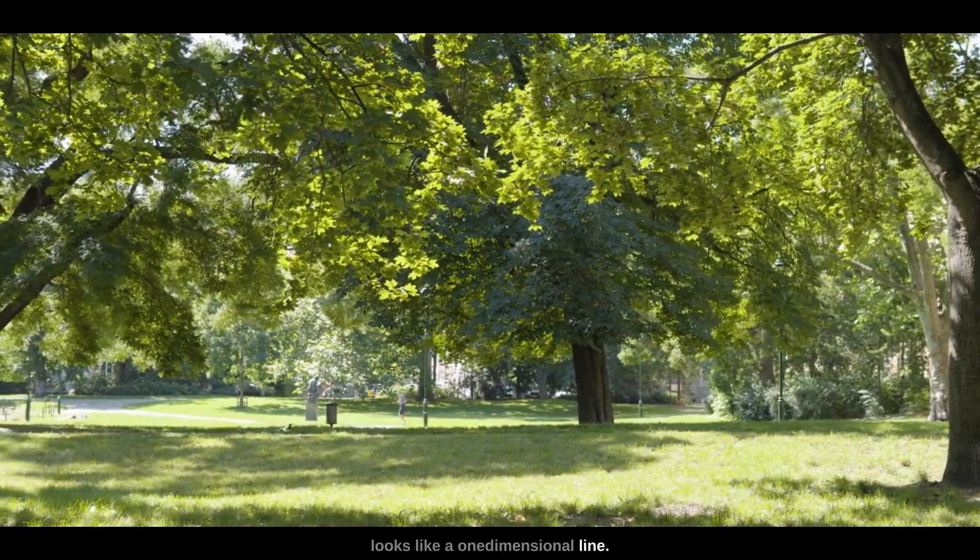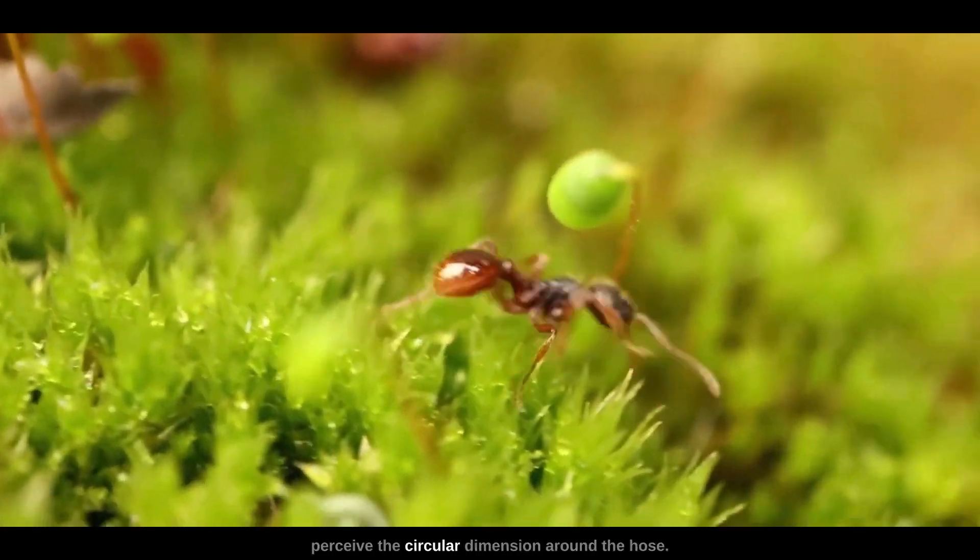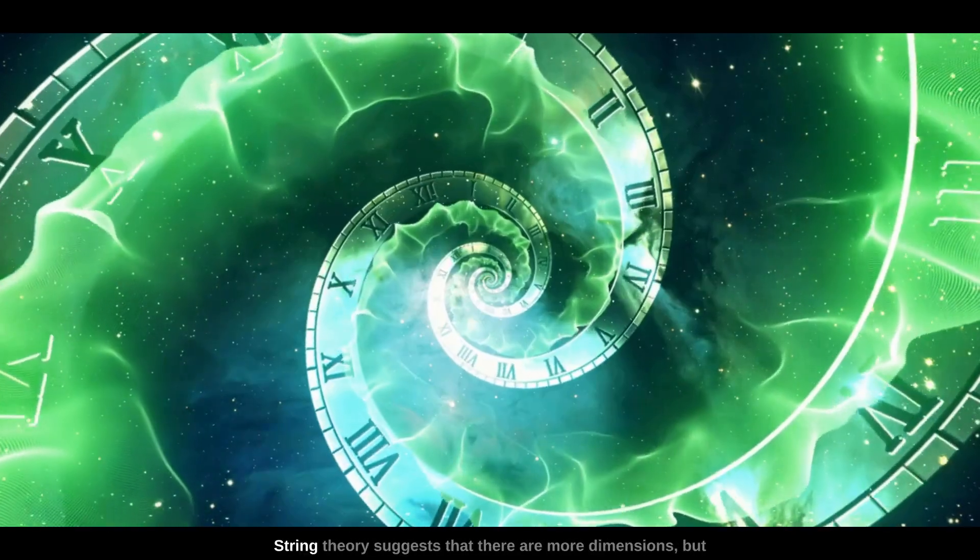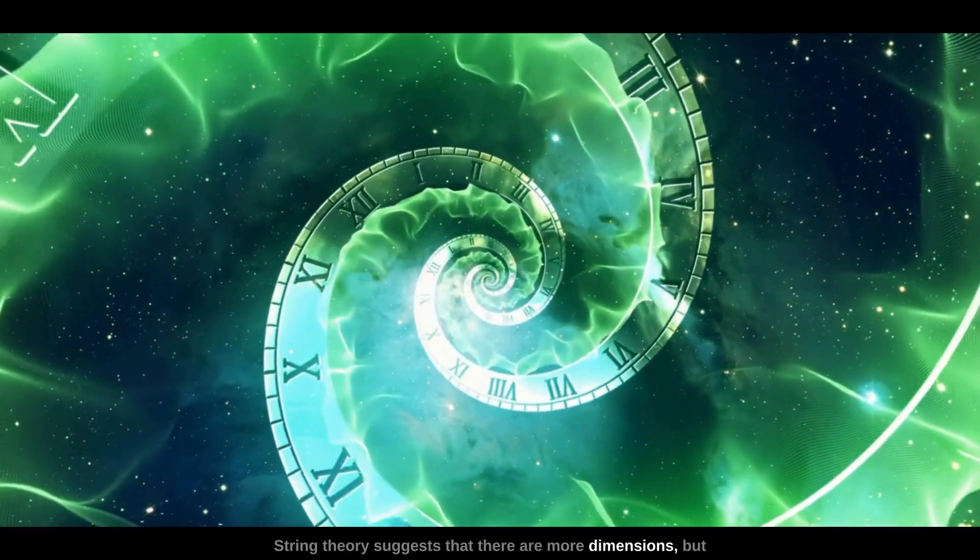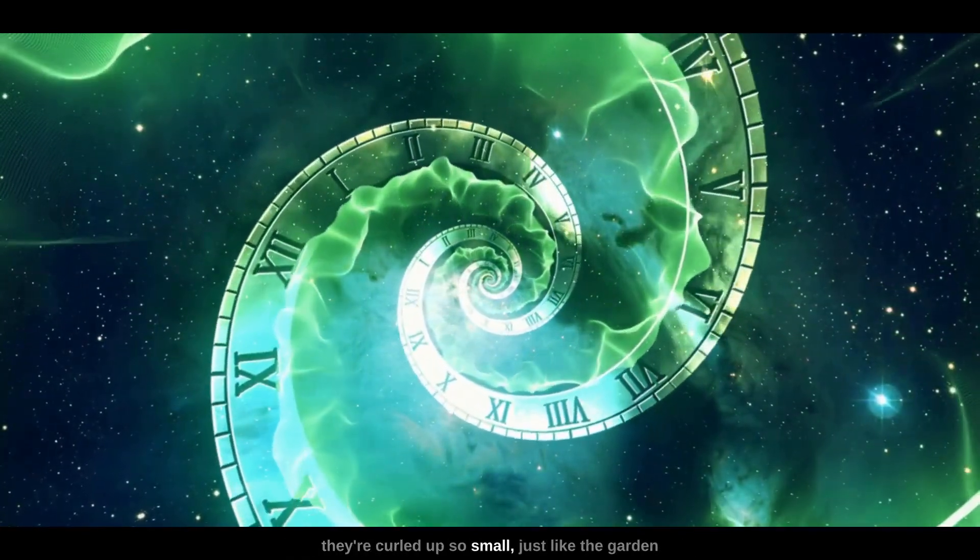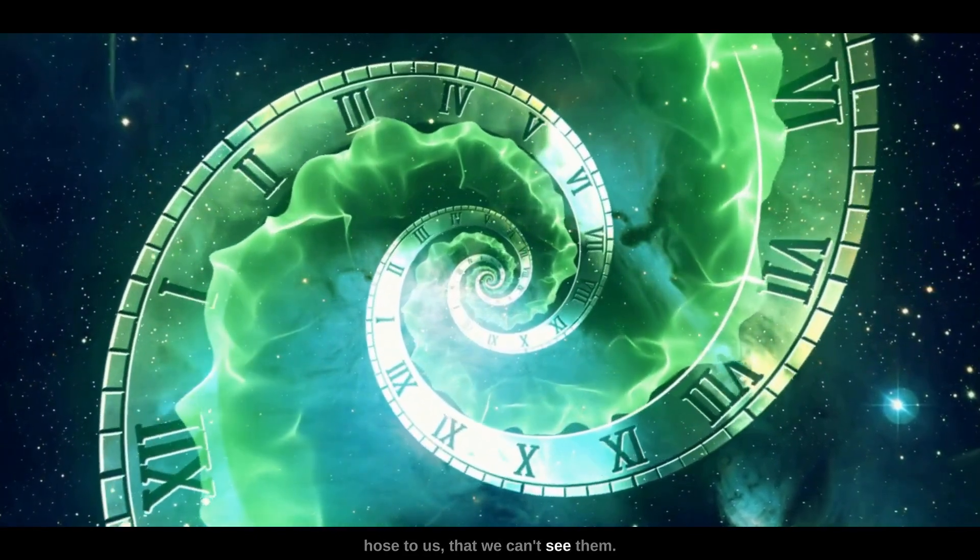Consider an ant walking on a garden hose. From far away, the garden hose looks like a one-dimensional line, but if you were the ant, you'd also perceive the circular dimension around the hose. String theory suggests that there are more dimensions, but they're curled up so small, just like the garden hose to us, that we can't see them.